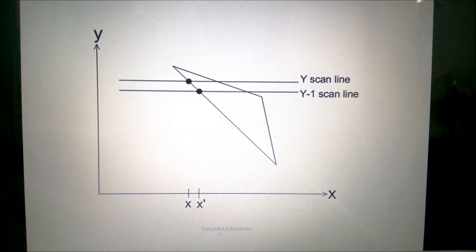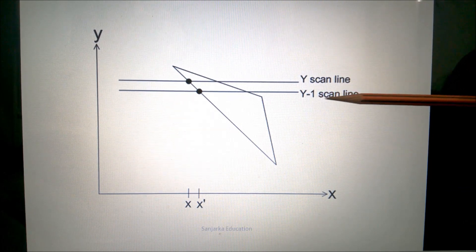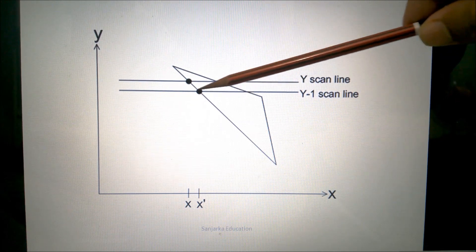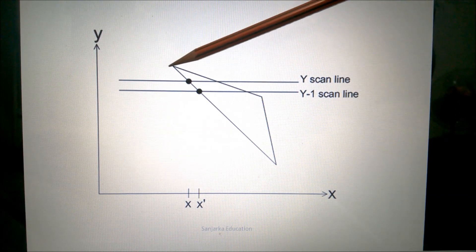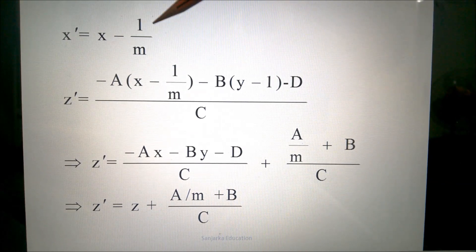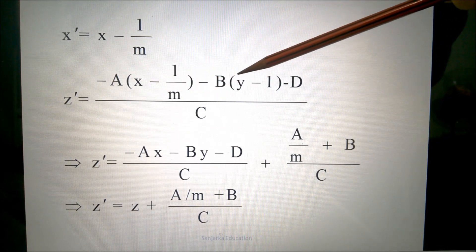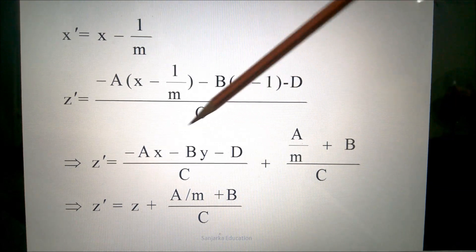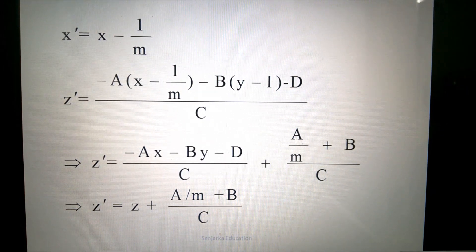When all pixel depth values for the y scan line have been found, we move to the y−1 scan line. The first pixel on the y−1 scan line is found using the slope m of the edge, where x' = x − 1/m. Substituting x' and y−1 into the surface equation, we can calculate the depth value z for that pixel. That is all about the depth buffer method.